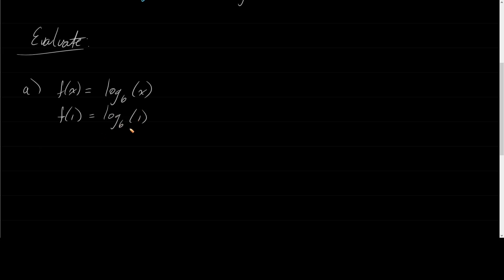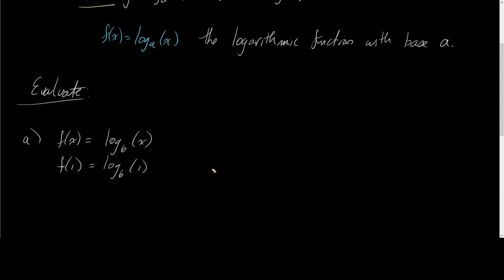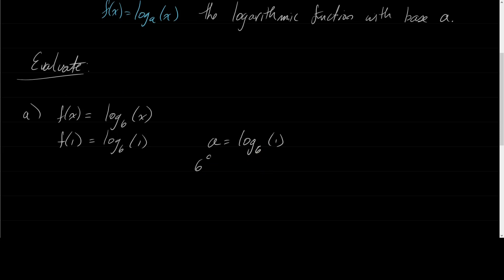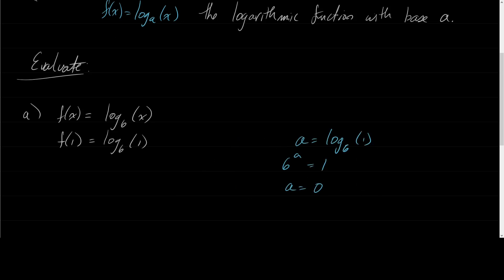How do we actually evaluate that? Let's look at our definition. When we had y equals log base a of x, this tells us we can rewrite it as a to the y equals x. So let's write: a is equal to log base 6 of 1, which by our definition means 6 to the a is equal to 1. What is a? Well, 6 to some power equals 1 — that power is 0. So from our side work, the answer is 0, because a is equal to log base 6 of 1 equals 0.